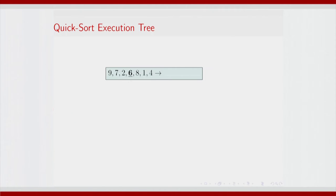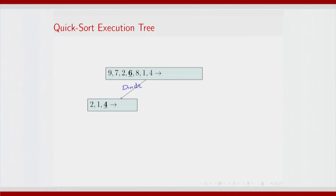Let us look at an example. Imagine that you have to sort 9726814. You have randomly picked 6 as a pivot element. This will lead to a divide where you have identified elements which are less than 6, that is 2, 1 and 4, and now you are invoking conquer through recursive divide on this subarray.